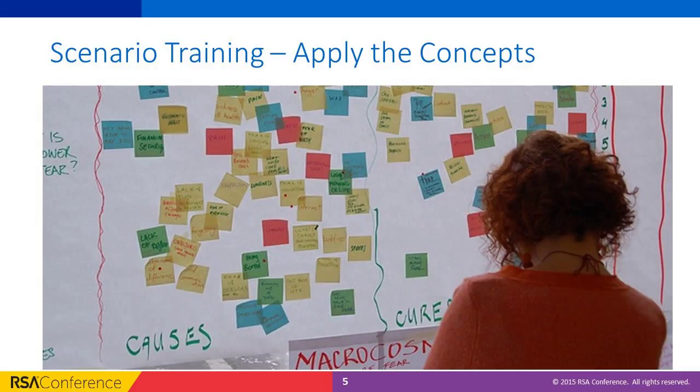Every decision that a company makes can be viewed through multiple different lenses depending on the responsibility of the person making the decision. Understanding those lenses will help you be effective at representing the importance of security to your entire organization. For Part 2, we wanted to go a little further in applying the concepts. This can be done in two main ways: a case study, which is based on an actual situation as a post-mortem, or scenario training, which poses a hypothetical with the same end goal.